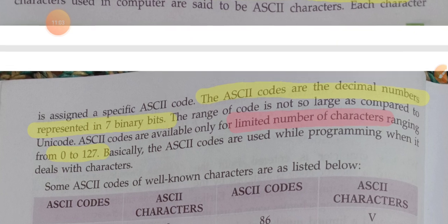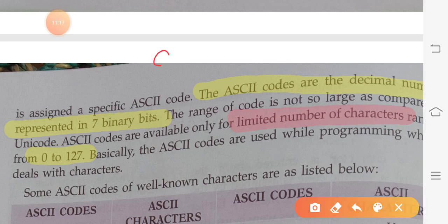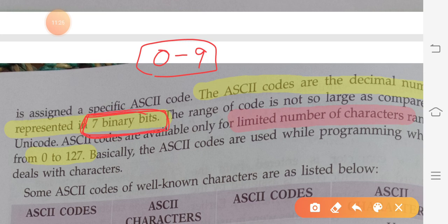The ASCII codes are decimal numbers represented in seven binary bits. A bit is simply zeros and ones — that is the computer's language. So when we press a key, the data is converted first into decimal form and then into binary form of zeros and ones.